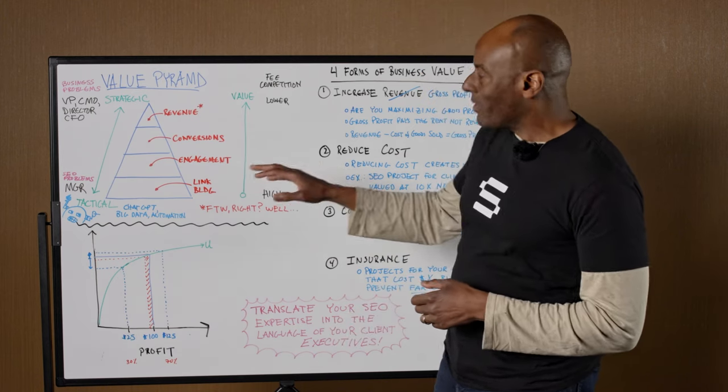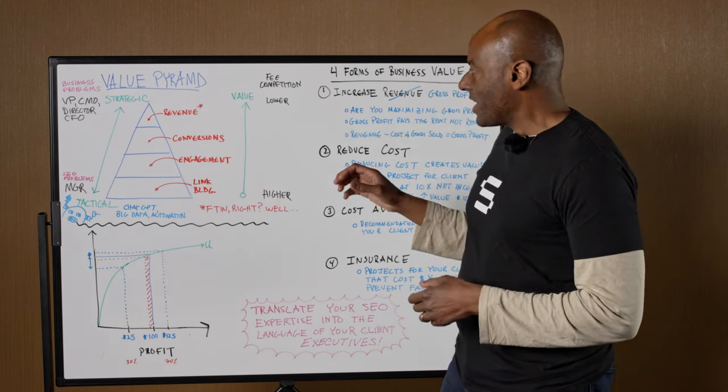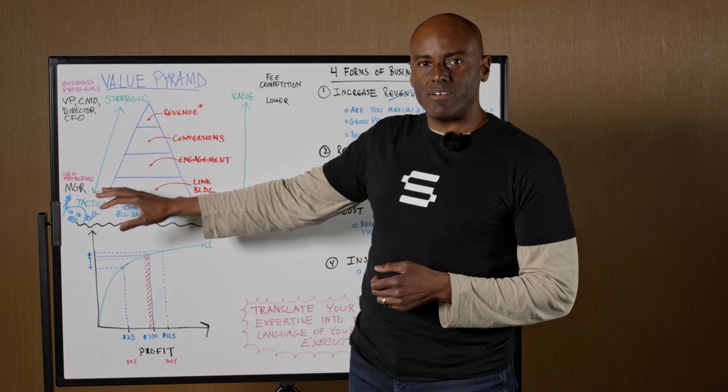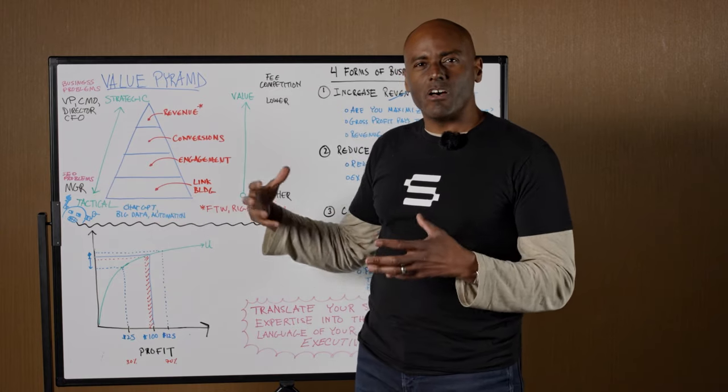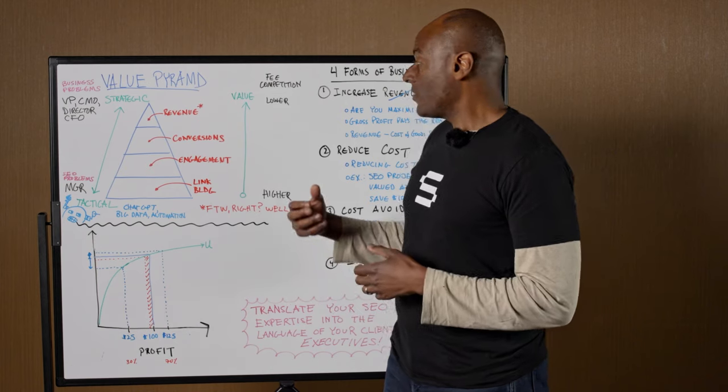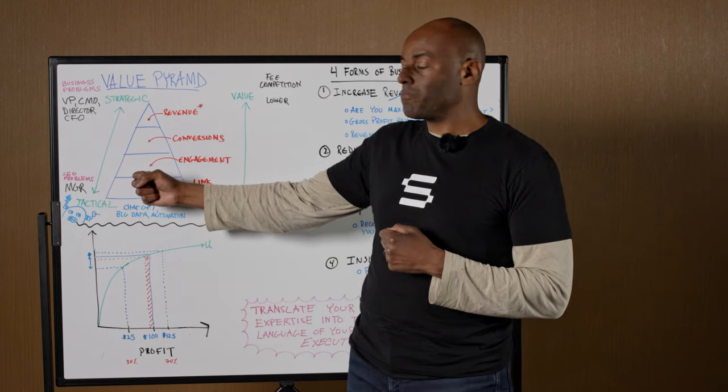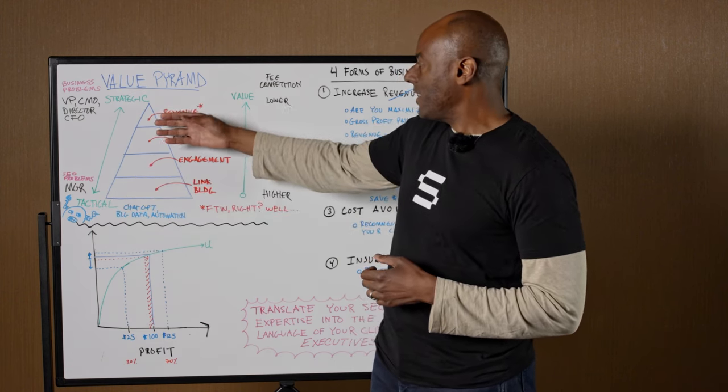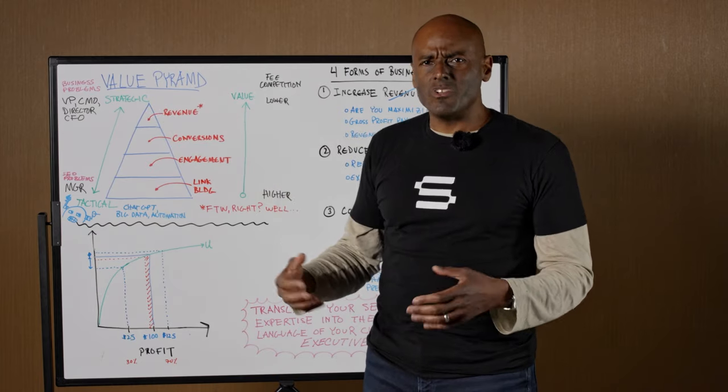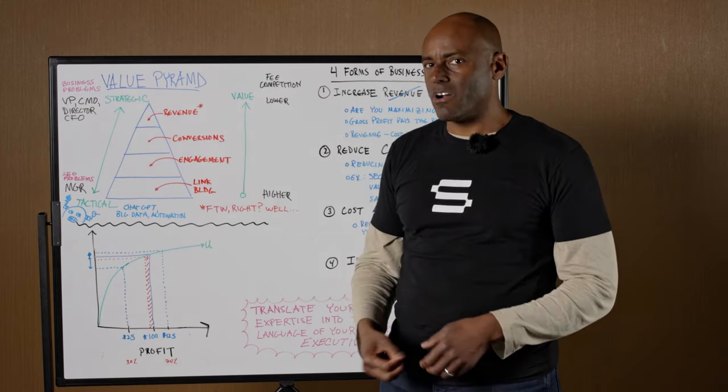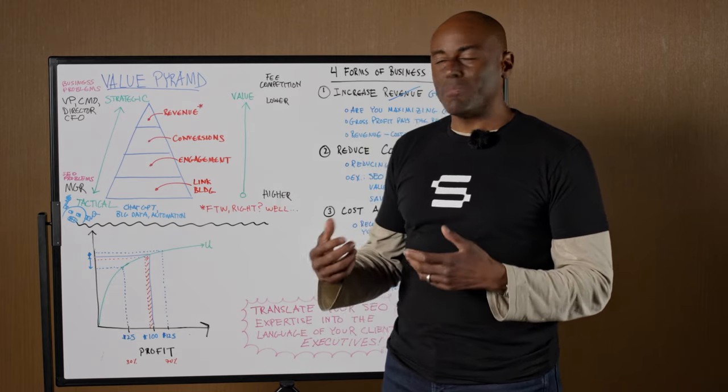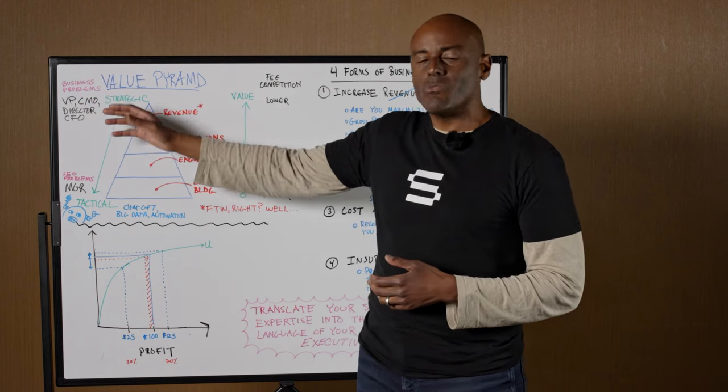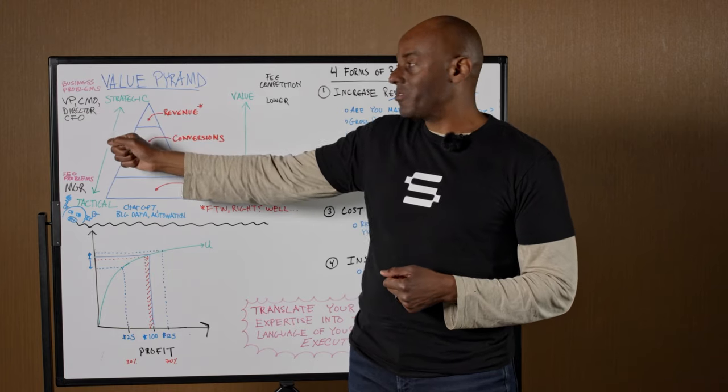You might want to think about titles at your client. If you're at the bottom of the value pyramid doing link building or other low-level but important tasks, you might be dealing with a specialist or manager. As you move up this pyramid talking about revenue, you've had these people join your QBRs or weekly calls with titles like director, VP, or CMO.